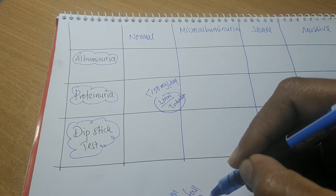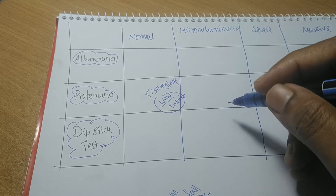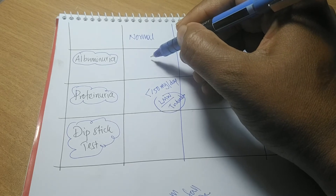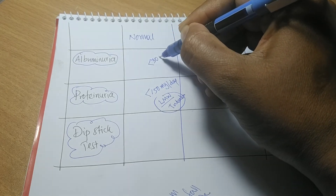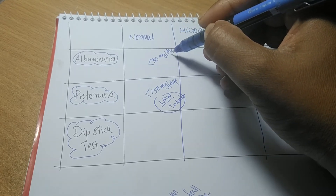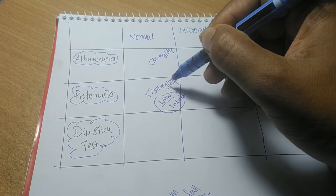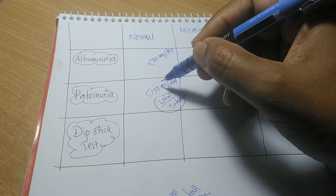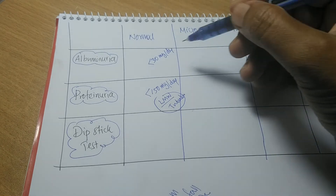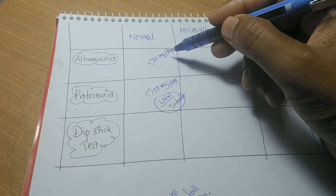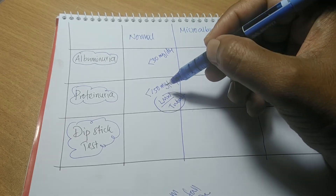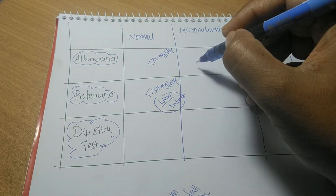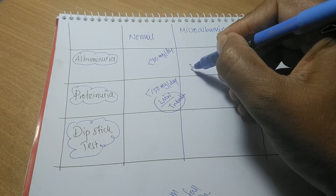Our daily proteinuria is less than 150 mg per day. Among this 150 mg total protein, there is a very small amount of albumin — less than 30 mg per day. This 30 mg of albumin is included within the 150 mg total protein. The maximum portion of that total protein is low molecular weight protein, and the remaining smaller portion is albumin, which is a high molecular weight protein. This is the normal range: albuminuria normally less than 30 mg per day, and total proteinuria normally less than 150 mg per day.